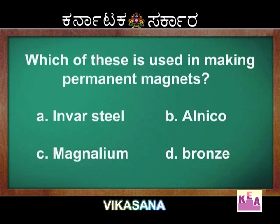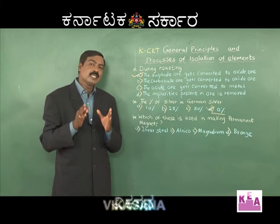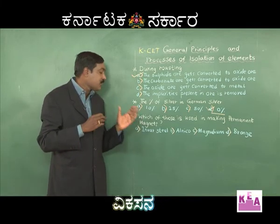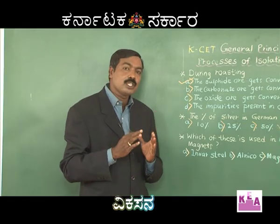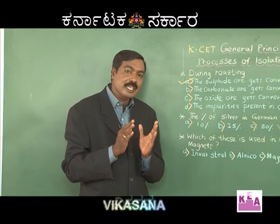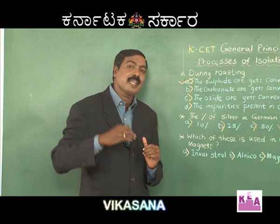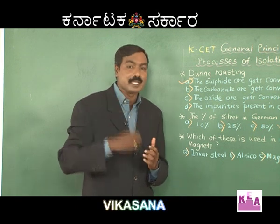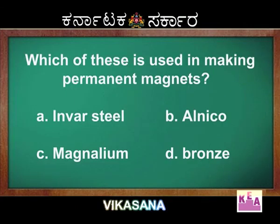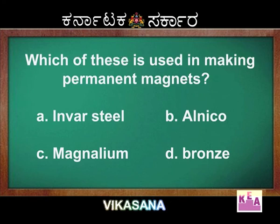Next question: which of these is used in making permanent magnets? As you learn the compositions of each of these alloys, you will get to know they are used in various proportions for preparing various components. Invar steel is used in making pendulums. Alnico is used in making magnets.